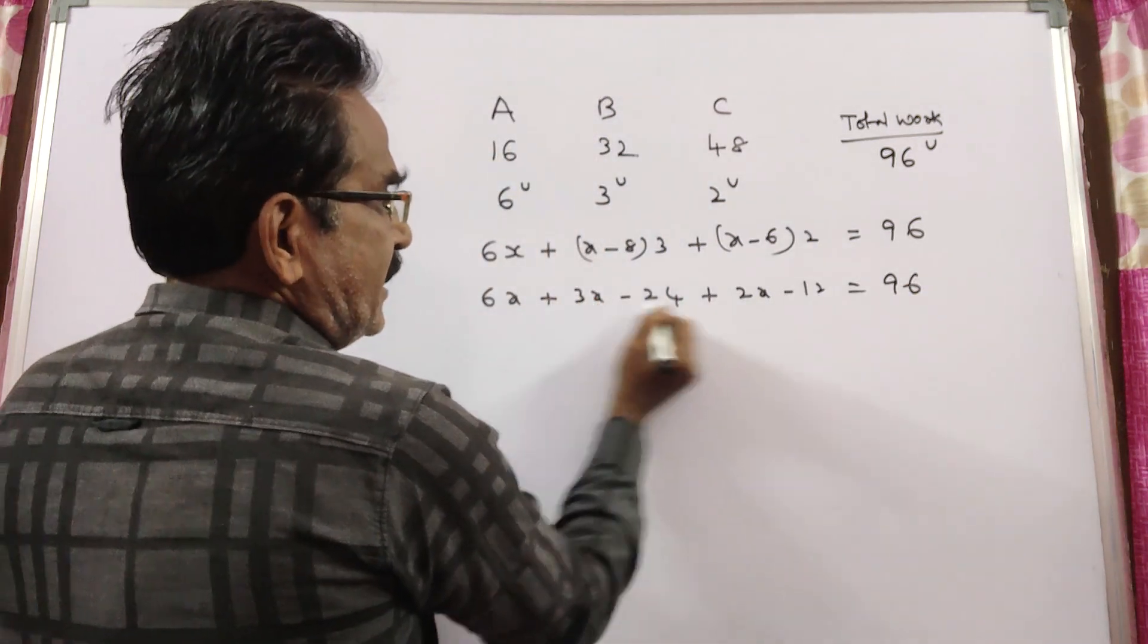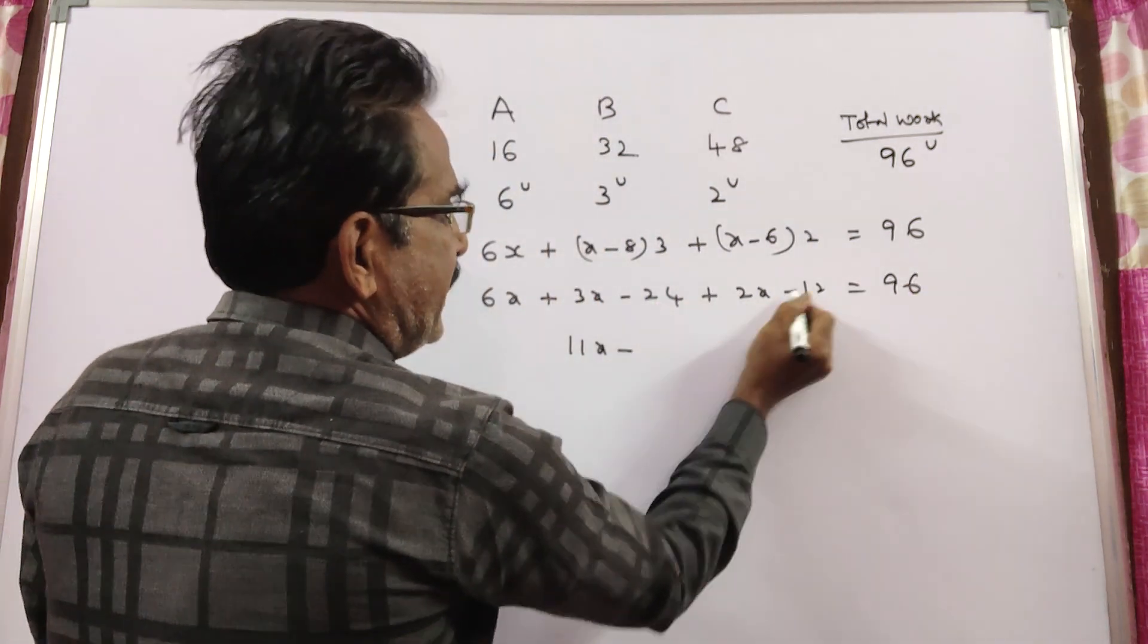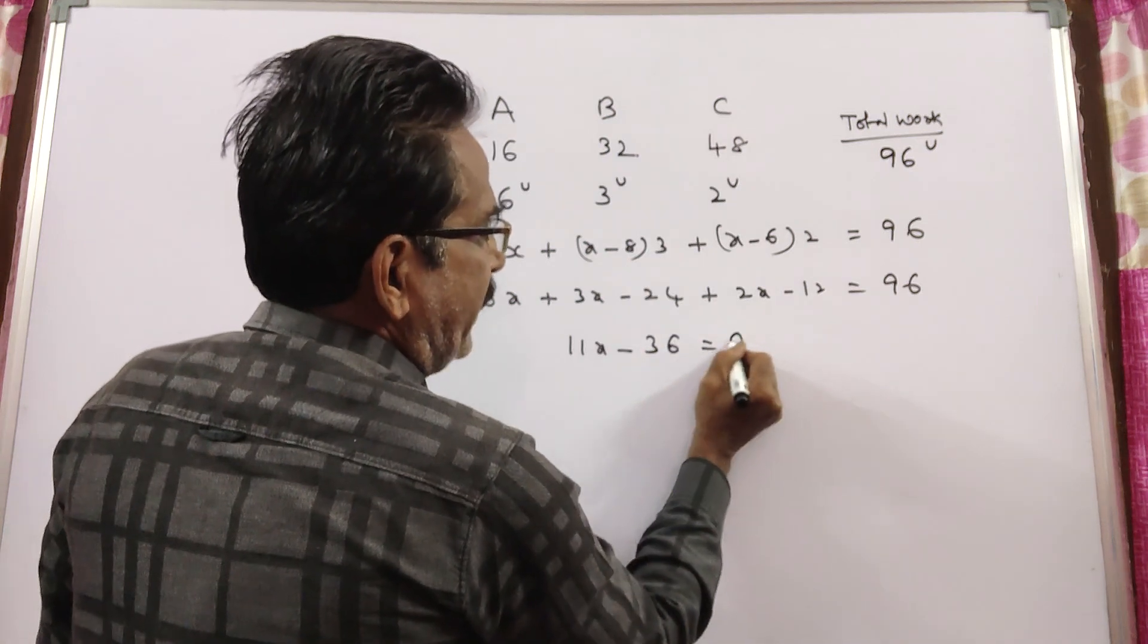6X, 3X, 9X, 11X minus 36 is equal to 96.